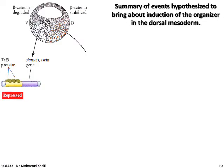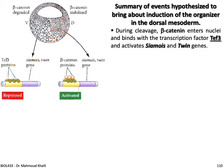To summarize the events that bring about induction of the organizer in the dorsal region: in the ventral region, there is no beta-catenin — it is degraded. The transcription factor TCF3 binds to the promoter region of two important genes, siamois and twin, and represses their activation. On the dorsal surface, during cleavage, beta-catenin enters the nuclei, binds with TCF3, and activates these two genes, switching on the transcription of siamois and twin.